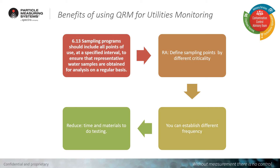What are the benefits of using quality risk management for utilities monitoring? Our sampling programs should include all points of use at a specified interval to ensure that representative water samples are obtained for analysis on a regular basis. Our risk assessment helps us define sampling points by different criticality. For example, WFI as a raw material is much more critical than WFI as a final rinse in our CIP cycle, so we can establish different frequencies based on that risk. This helps us reduce time and materials for testing, but more importantly helps us ensure that we're sampling at areas of greatest risk to our products.